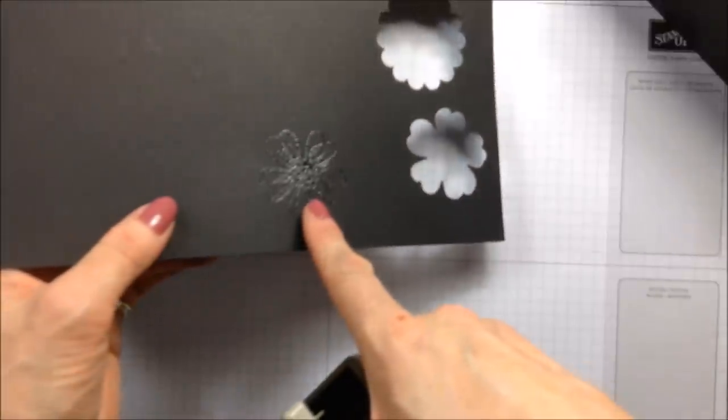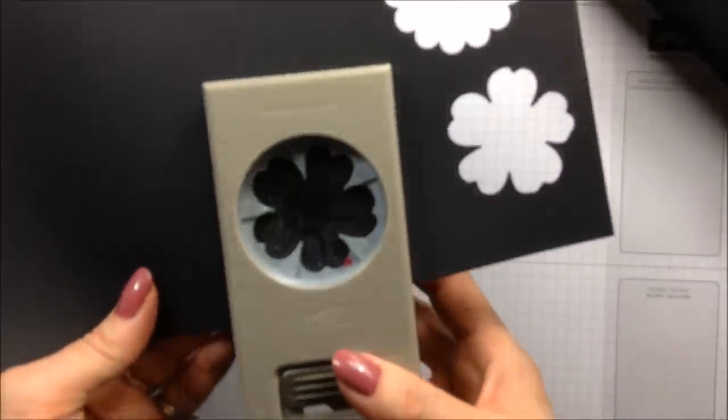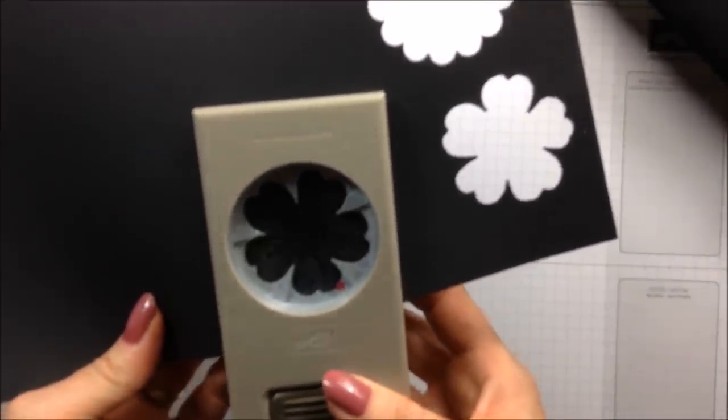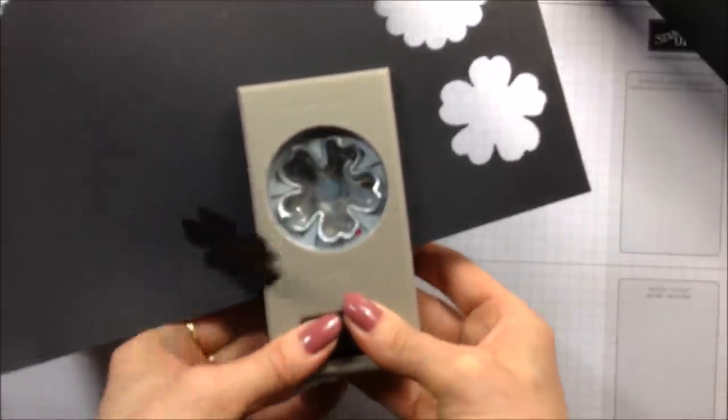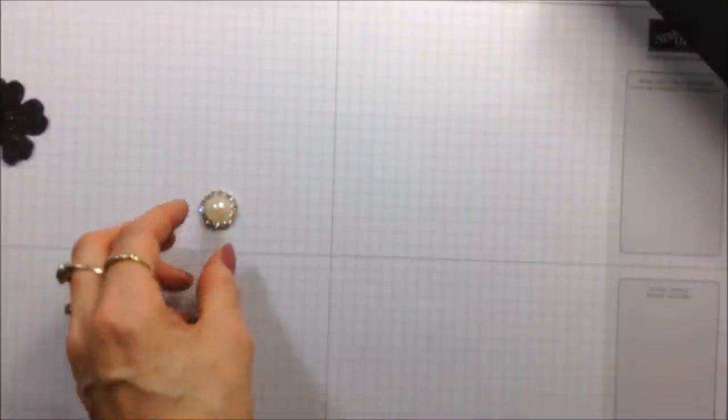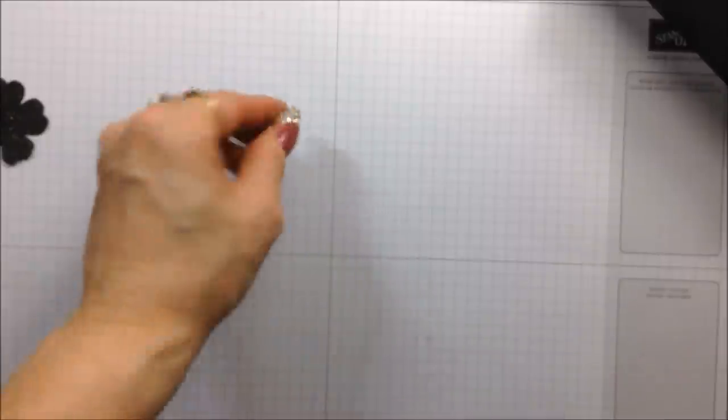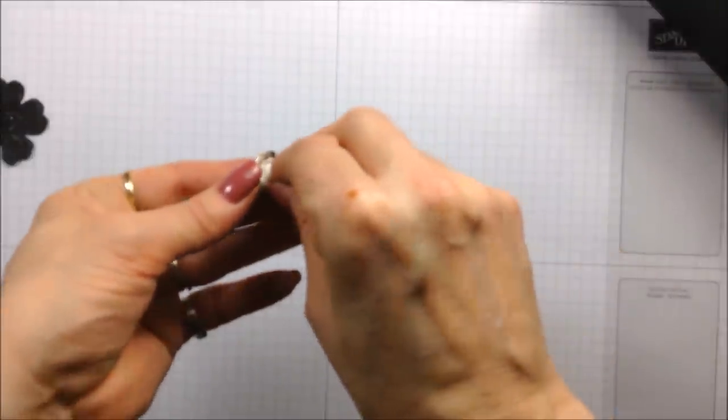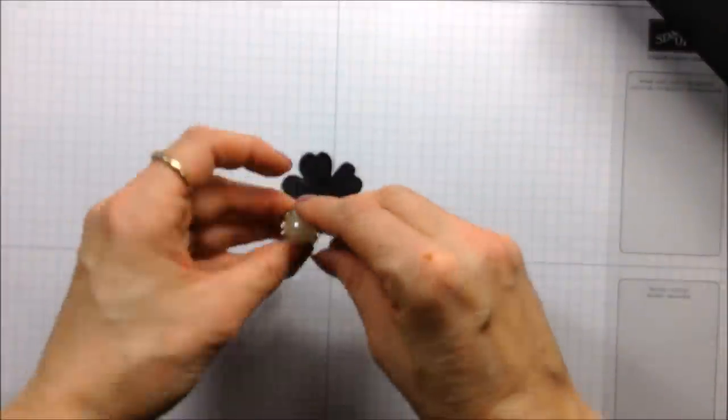I've already stamped out and I have heat set my image here, and I'm just going to use my pansy punch now to punch out the flower like that. I have here, I found this in my stash, pretty little embellishment which I'm just going to mount in the center of my stamped flower.